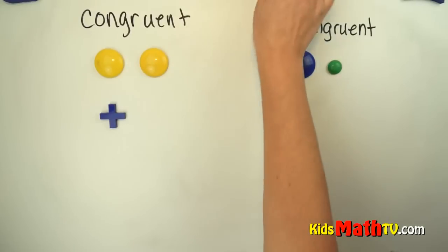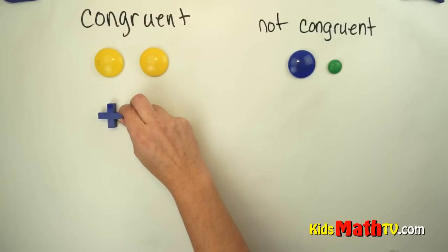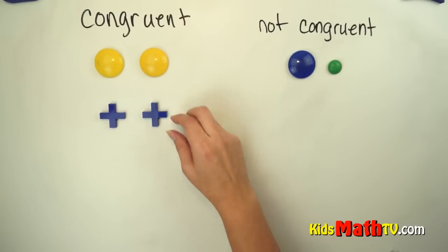Here's an example of congruent. Same shape and same size. If I put it right on top of each other, you can see they are the same size.